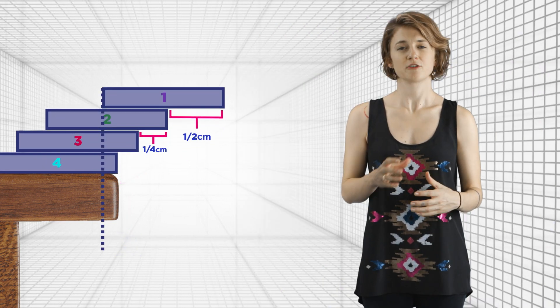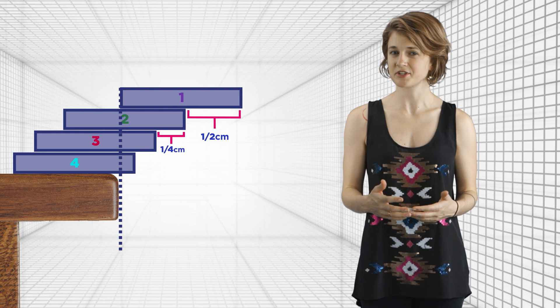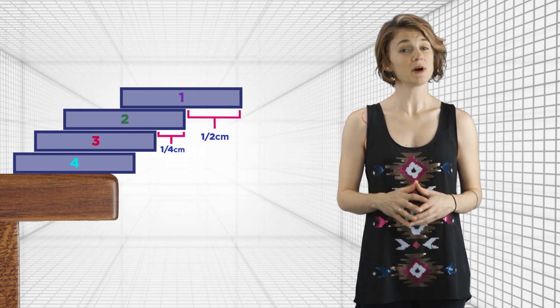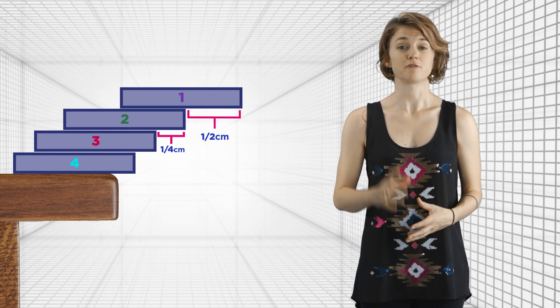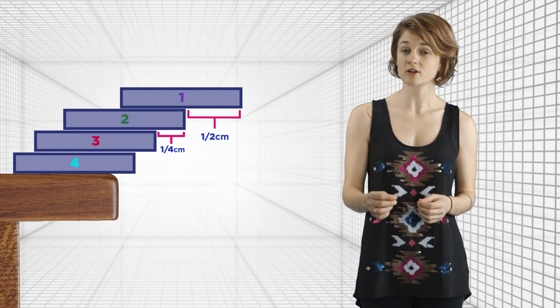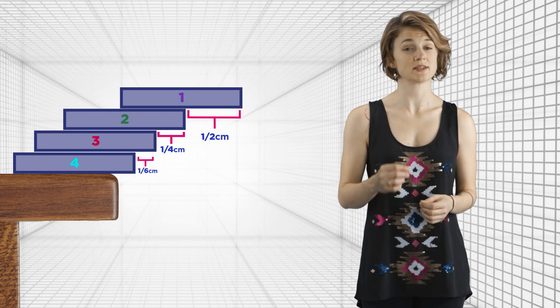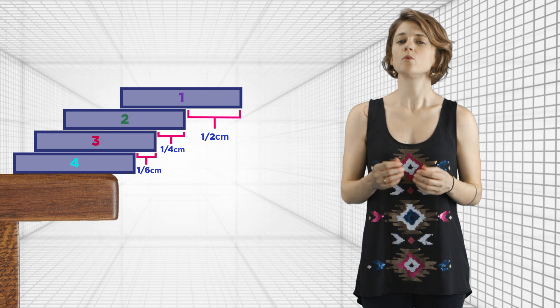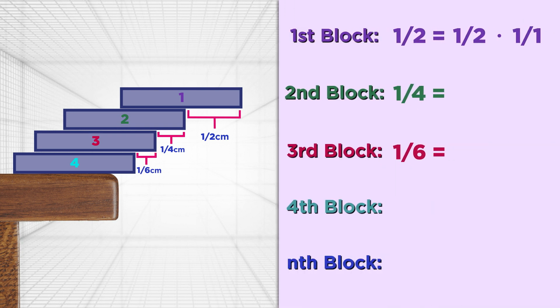When we put the fourth block under, the first block will actually move past the edge of the table, which complicates the method we've been using. But let's look at what we've learned. The first block extends ½ centimeter out from the second. The second extends ¼ centimeter out from the third. And the third extends 1⁄6 centimeters. We can rewrite that as ½ times 1 over 1 and ½ times 1 over 2 and ½ times 1 over 3. That leaves us with a pretty good guess that the fourth block will extend 1⁄8 centimeters, which is ½ times 1 over 4. And the nth block will extend ½ times 1 over n centimeters.